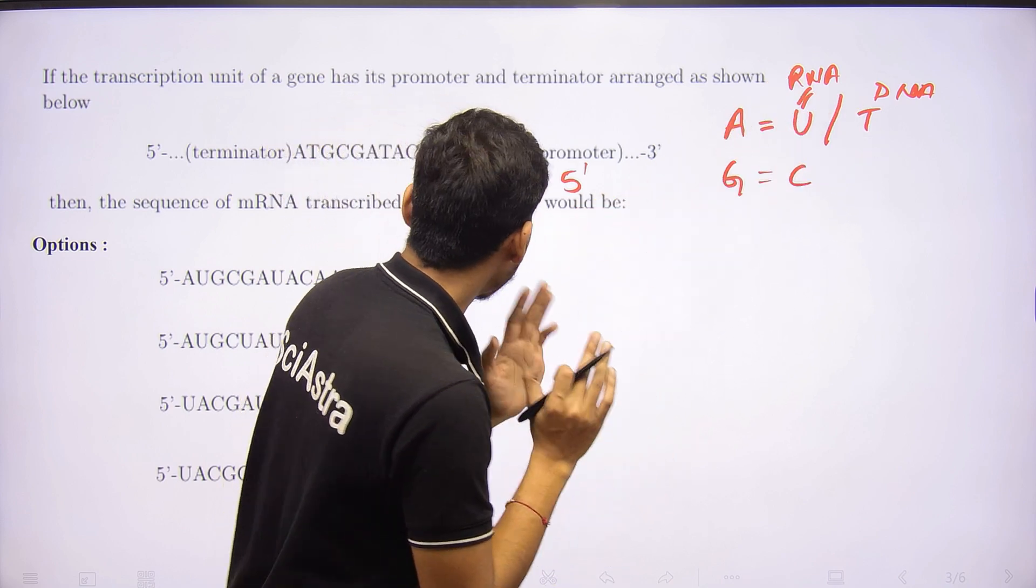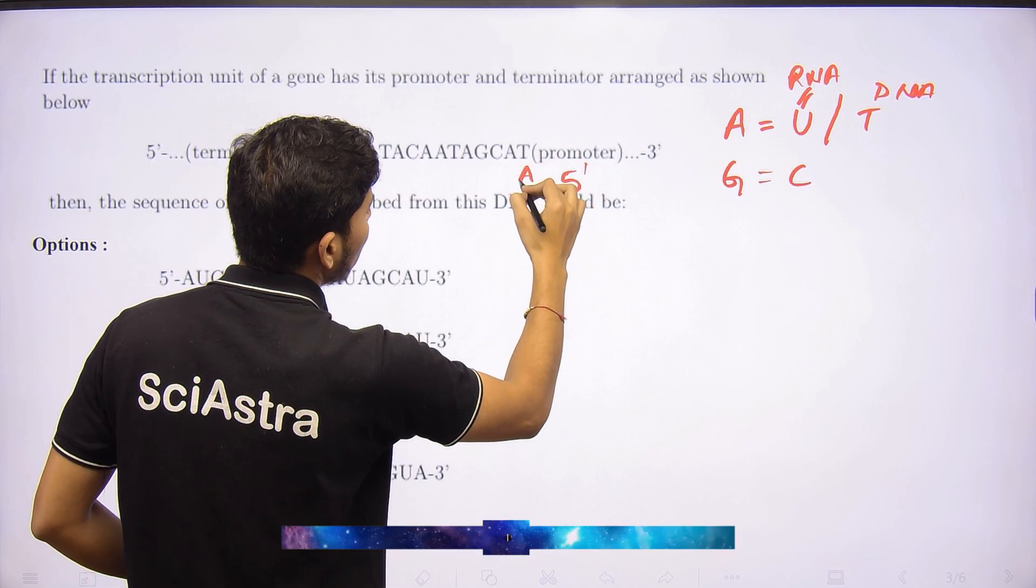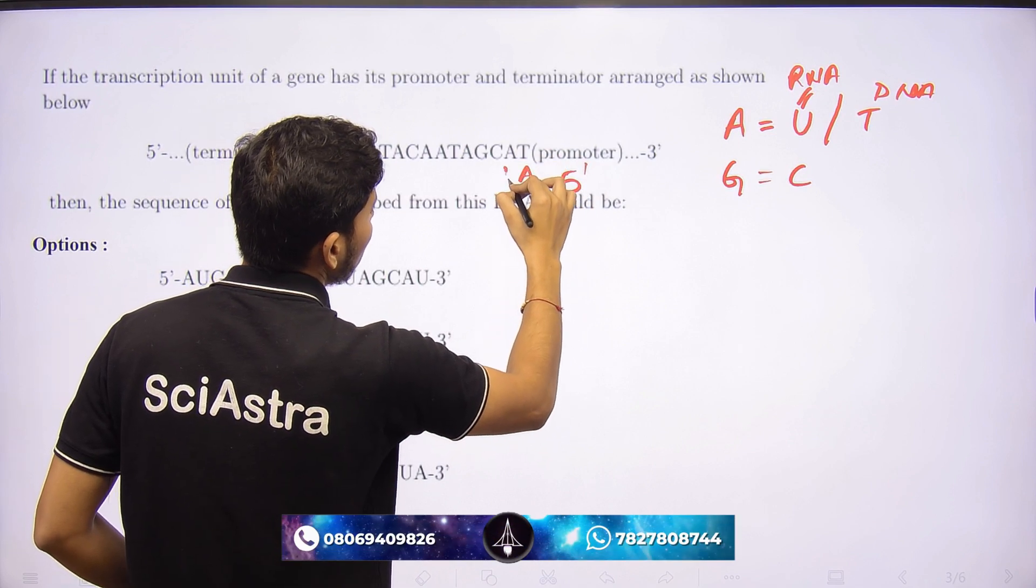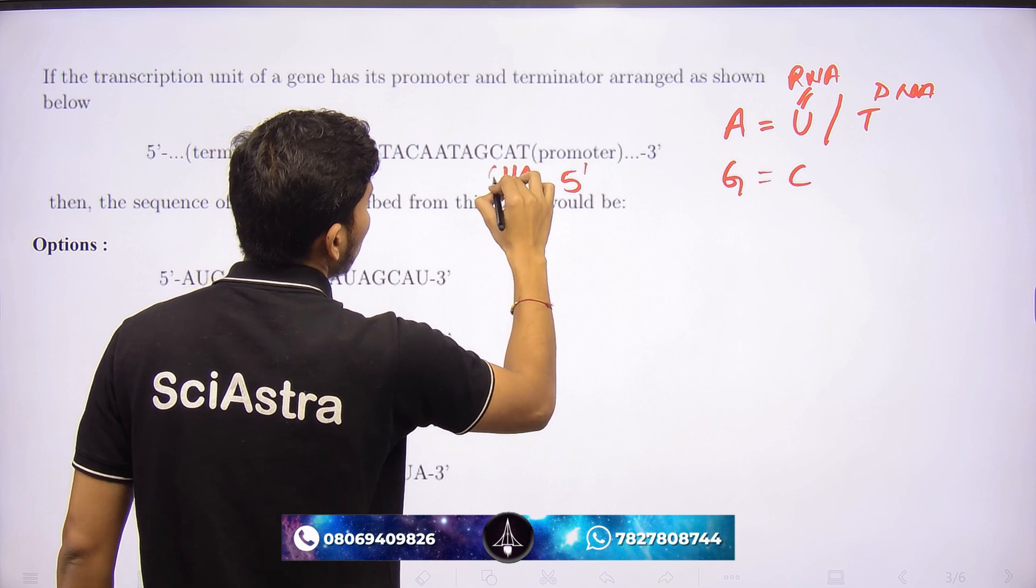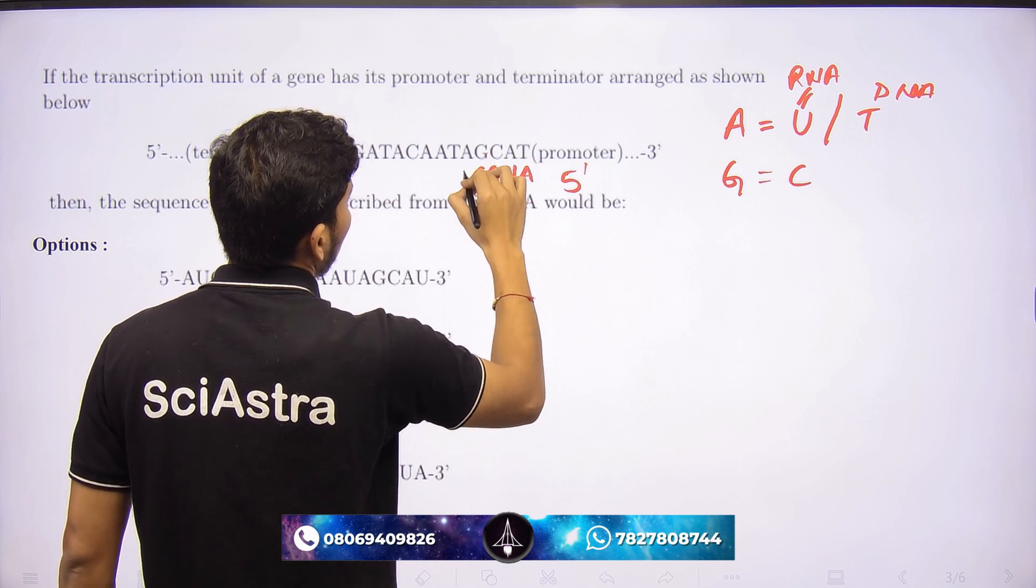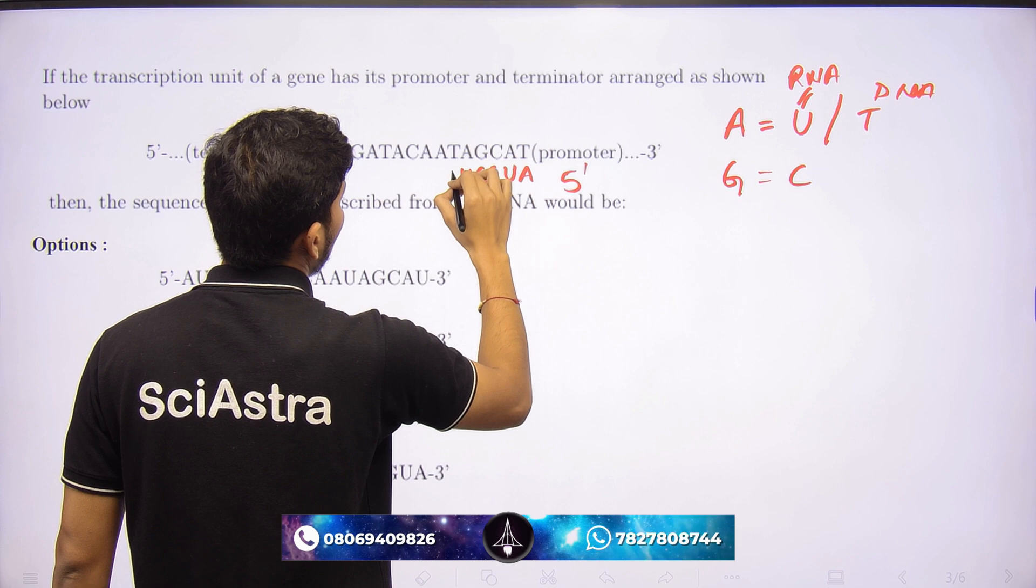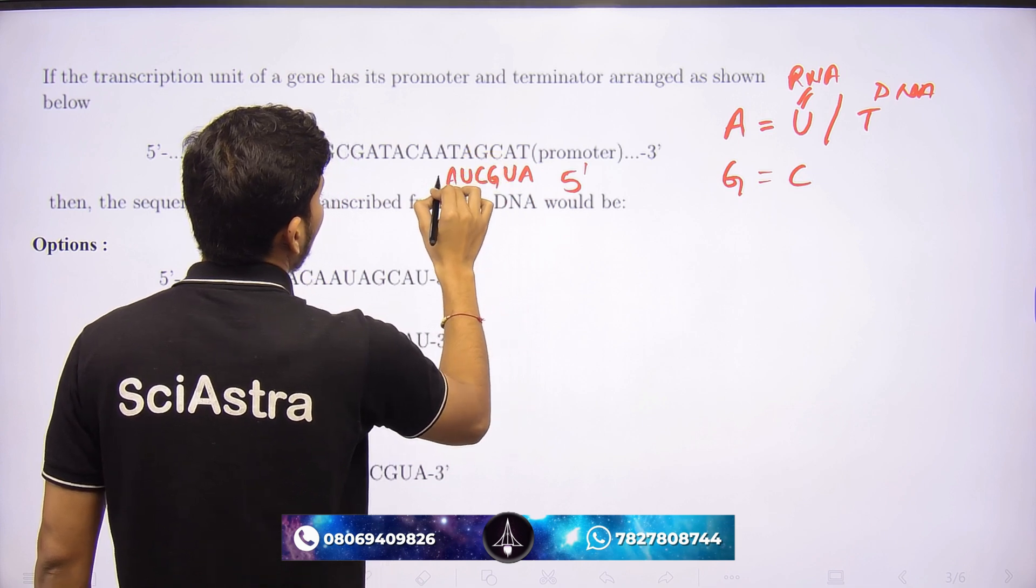A to U, C to G, G to C, A to U, U to A. So like this it will keep on going. Let's also make some of the complementary bases at this end.